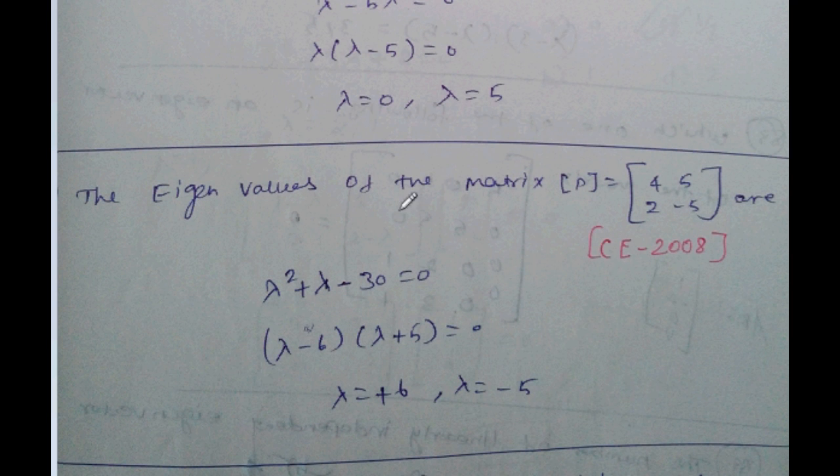The eigenvalue of matrix [4, 5; 2, -5]. Lambda squared, 4 minus 5 equal to minus 1. So lambda, 4 into minus 5 minus 20, 5 into 2 minus 10, so minus 30. Factorize: lambda squared minus 6 lambda plus 5 equal to 0. Lambda equal to 6, lambda equal to minus 5.